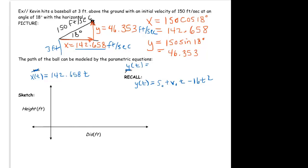Since we're in feet we're going to use negative 16 t squared, so y of t would be the initial height is 3 feet plus the initial vertical velocity is 46.353 t minus 16 t squared.